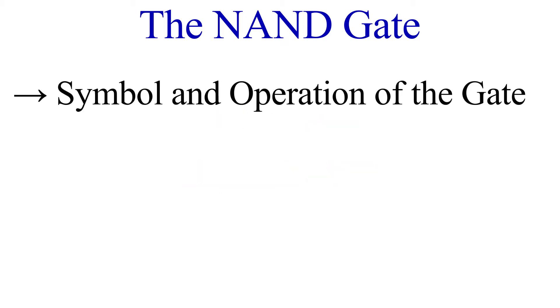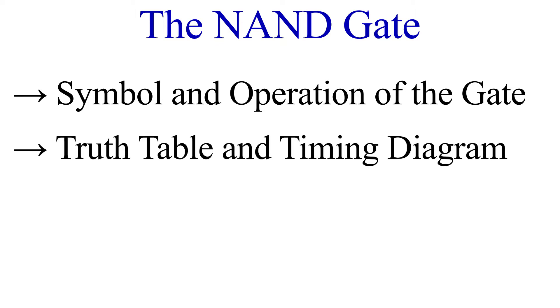Our next logic gate is called the NAND gate, which is a contraction of NOT AND or negated AND. This is a special gate because it can be used to create all the other logic gates. As with the other videos on logic gates, we will begin examining its symbol and operation.